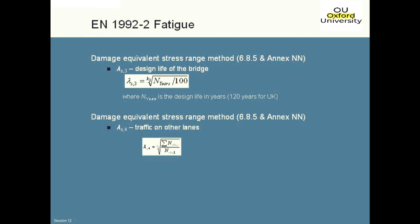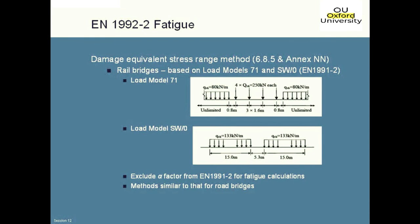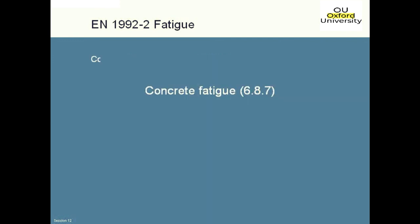The final factor is lambda_S4, which accounts for the effects of traffic in the other lanes. We've traversed the vehicle in one particular lane giving the worst damage, but if you've got different numbers of lorries in other lanes we need to take that into account as well — as a factor either up or down. For rail bridge loading, you have to do exactly the same procedure — calculating lambda_S1, lambda_S2, lambda_S3, and lambda_S4 — but depending on what type of rail loading you're considering, you choose one of the two fatigue load models.